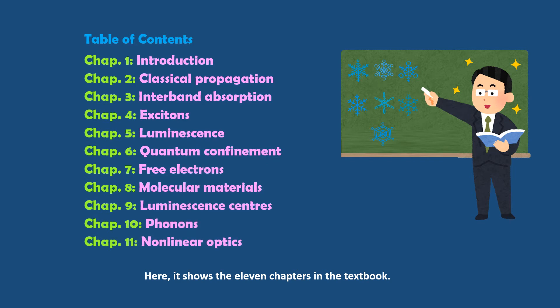The textbook covers eleven chapters: Chapter 1 Introduction, Chapter 2 Classical Propagation, Chapter 3 Inter-band Absorption, Chapter 4 Excitons, Chapter 5 Luminescence, Chapter 6 Quantum Confinement, Chapter 7 Free Electrons, Chapter 8 Molecular Materials, Chapter 9 Luminescence Centers, Chapter 10 Phonons, Chapter 11 Non-linear Optics. I plan to teach from Chapter 1 to Chapter 8 in this course.